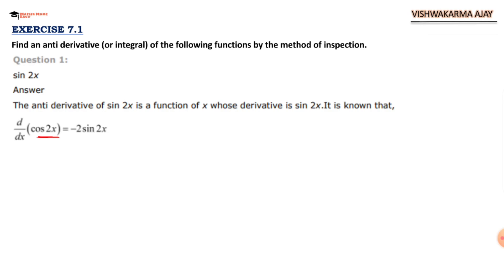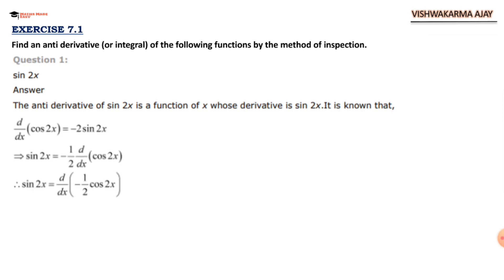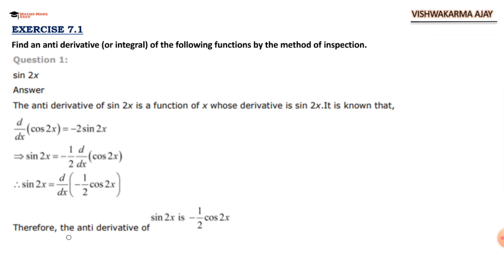But we need only sine 2x, so I am going to transfer this minus 2 to the other side: sine 2x equals minus 1 upon 2 times the derivative of cos 2x. Taking this minus 1 upon 2 inside the derivative, the antiderivative of sin 2x is therefore minus 1 upon 2 cos 2x.